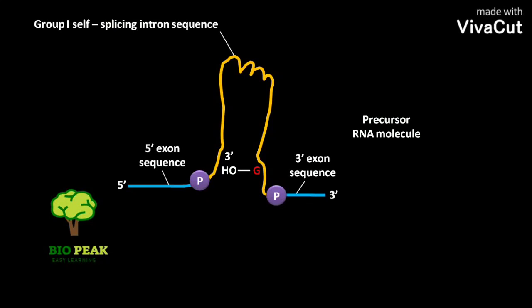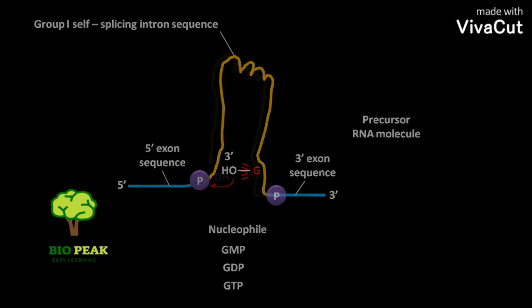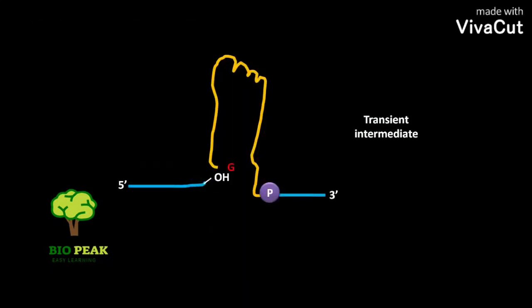the 3' OH of guanosine acts as a nucleophile and attacks the phosphate at the 5' splice site. Like guanosine, GMP, GDP, or GTP also acts as a nucleophile. Due to this attack, a transient intermediate RNA is formed.